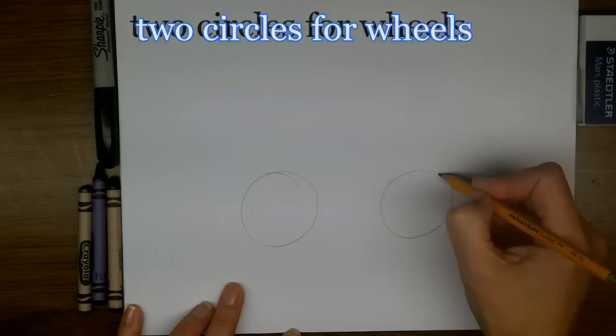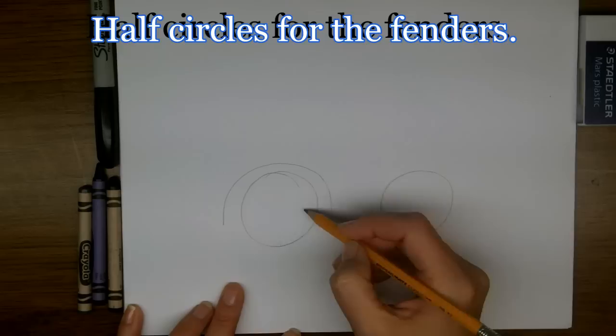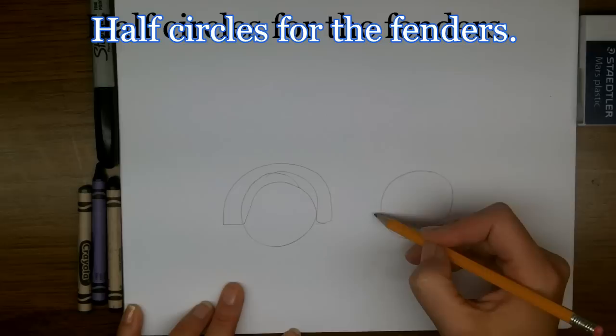We'll start off by drawing two circles for wheels, then we'll draw the fenders up over the wheels and a little arc over the top of the wheel. Same on the front.